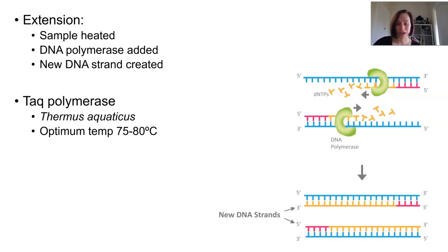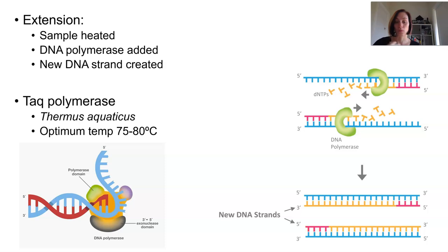It's known as Thermus aquaticus, and its optimum working temperature is around 75 to 80 degrees. So eventually, a new DNA strand will be created that's complementary to the template DNA strand.